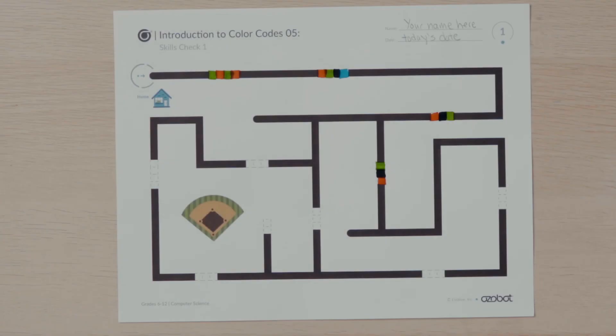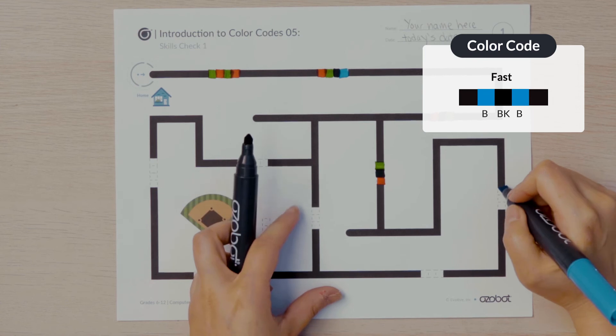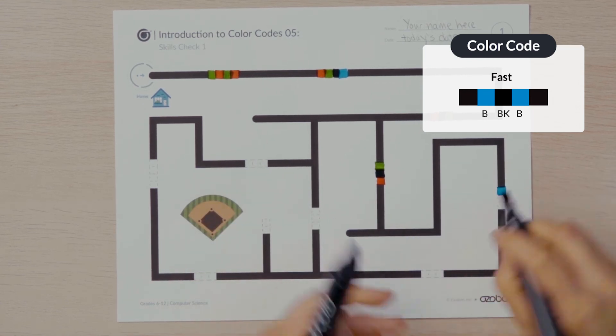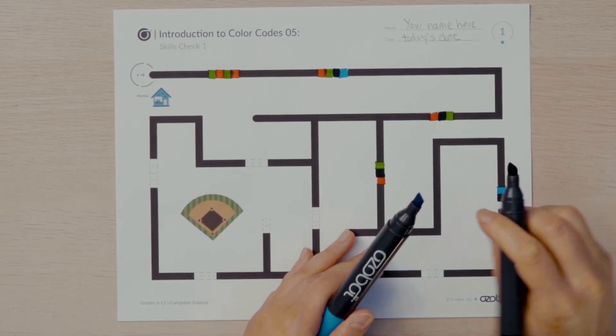Continuing along the maze, there is a color code space without an intersection following it. I'll use that space to fill in a speed color code. I'll program my bot to go fast using blue, black, blue. What speed would you like your Ozobot to go?